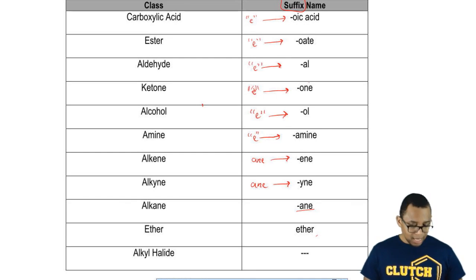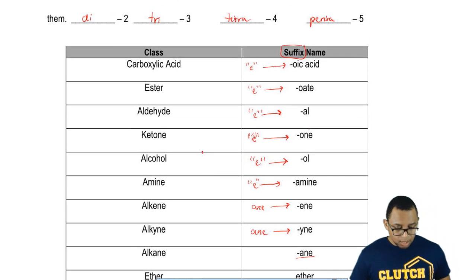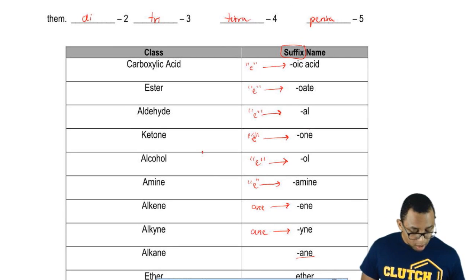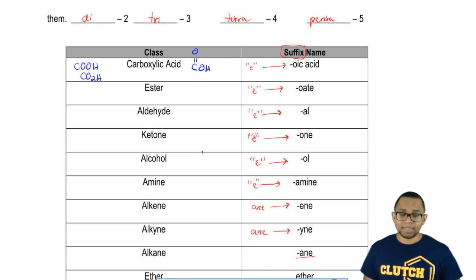Ethers, we'd end the name with ether, and alkyl halides, they don't form the end of the name. A carboxylic acid can be seen as C double bond O, OH. You might even see it as COOH, or you might see it as CO2H. These are the different ways we can see a carboxylic acid.